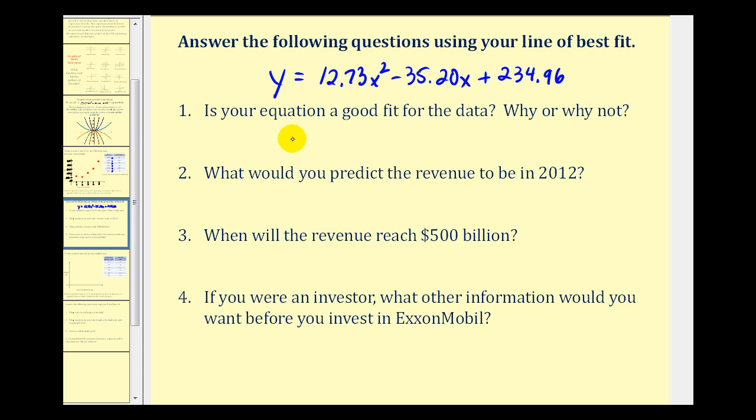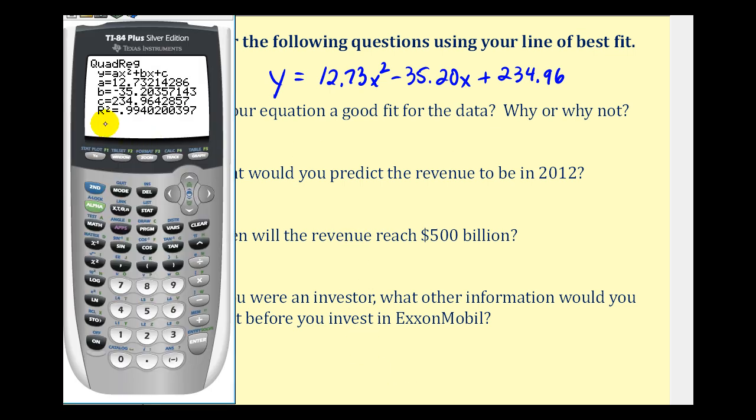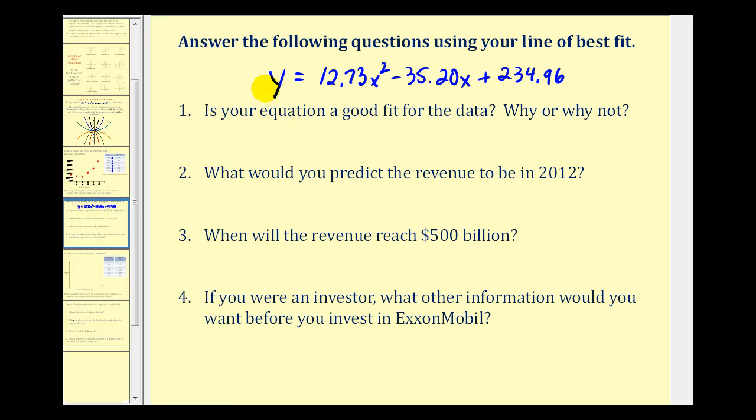Our first question asks, is the equation a good fit for the data? Why or why not? This is the main reason why we wanted to have the calculator give us r squared. The coefficient of determination is approximately 99.4 percent, which tells us the percent of variability that can be explained by this model. And since this is very close to positive one, this is an excellent model for the given data. So we can explain this in detail, but the main reason is because r squared is approximately equal to .99, or 99 percent, which is very close to one. And the closer r squared is to one, the better the model.